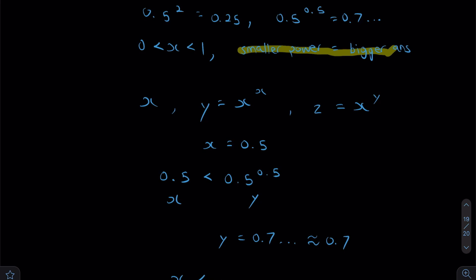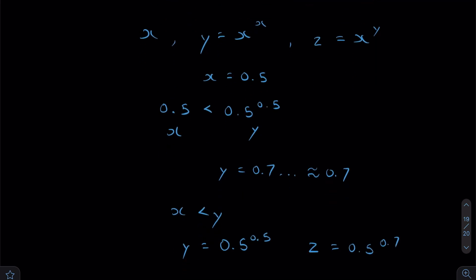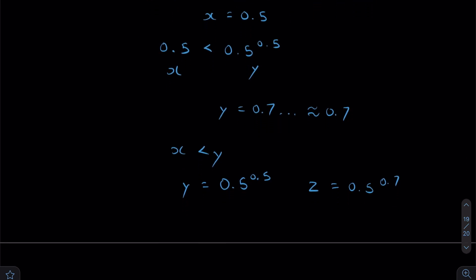If we look back at our earlier definition, it says a smaller power will give a bigger answer. So let's look. Who has a smaller power? Does y or z have a smaller power? And from what we've worked out, we know that y has a smaller power. Smaller power gives bigger answer, which means y will be larger than z.